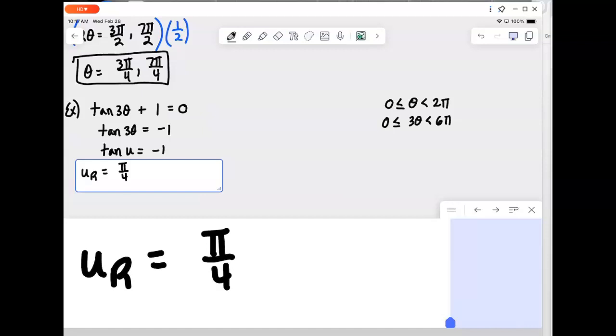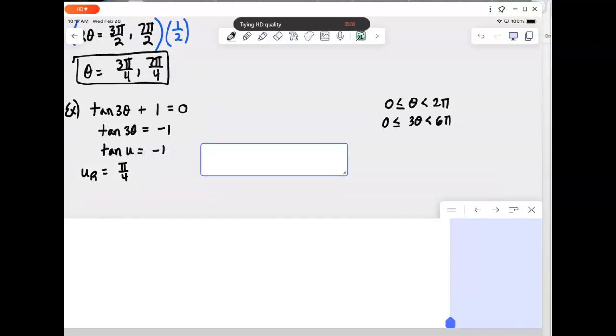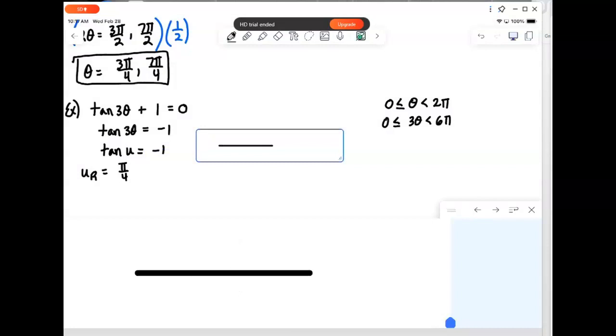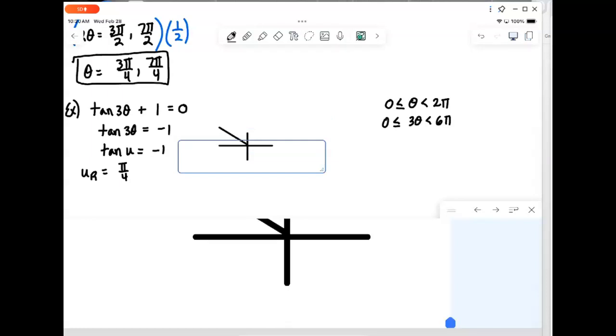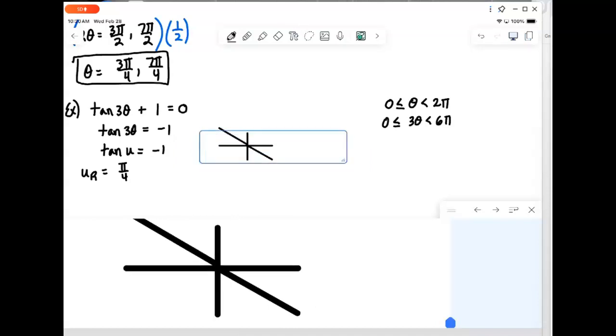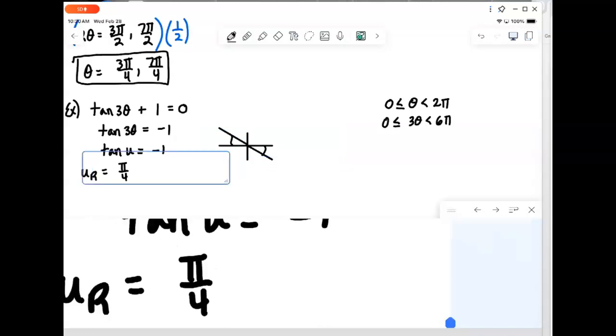So, that's what we do with our u. And then, of course, once we've found the reference angle, we take that reference angle and plot it into the quadrants that match up with the sign of our answer. So, tangent being negative would put us in the second quadrant and also in the fourth quadrant. All students take calculus. So, they're all positive in the first, sine in the second, tangent in the third, cosine in the fourth.